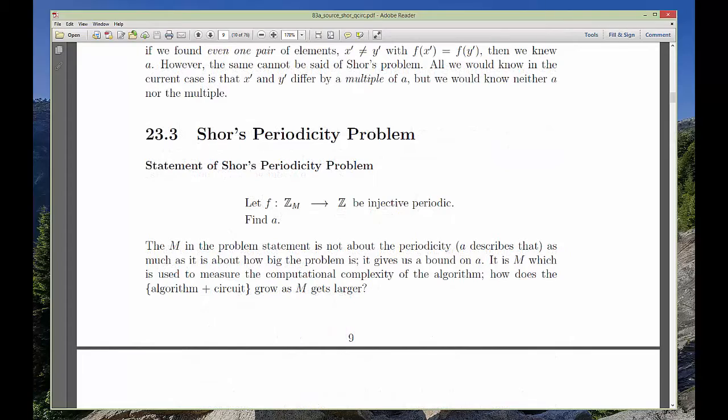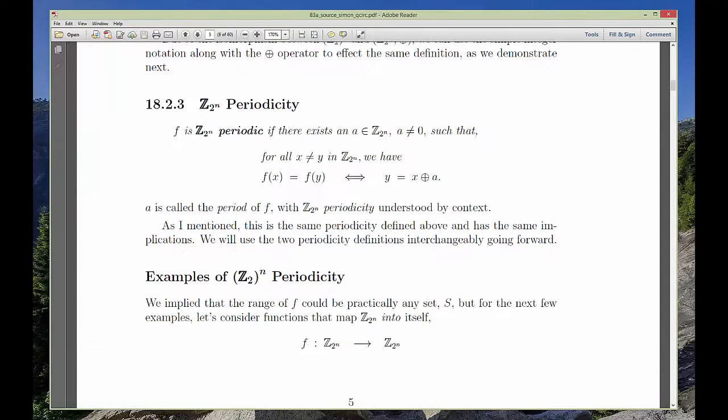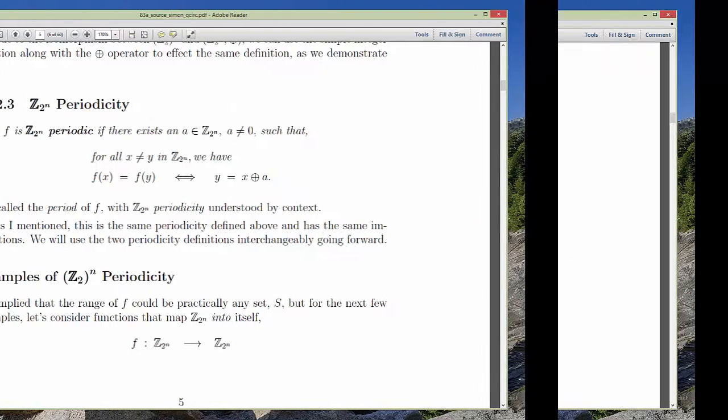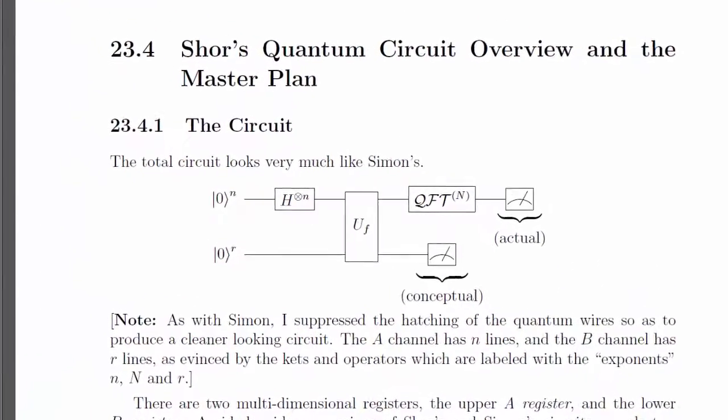Shor's problem is the real-world version of Simon's problem. It promises to find a period A of a periodic function of ordinary integers, not that wacky mod 2 variety addressed by Simon. As we intimated last week, it does this with a 1-2 punch of quantum prestidigitation.